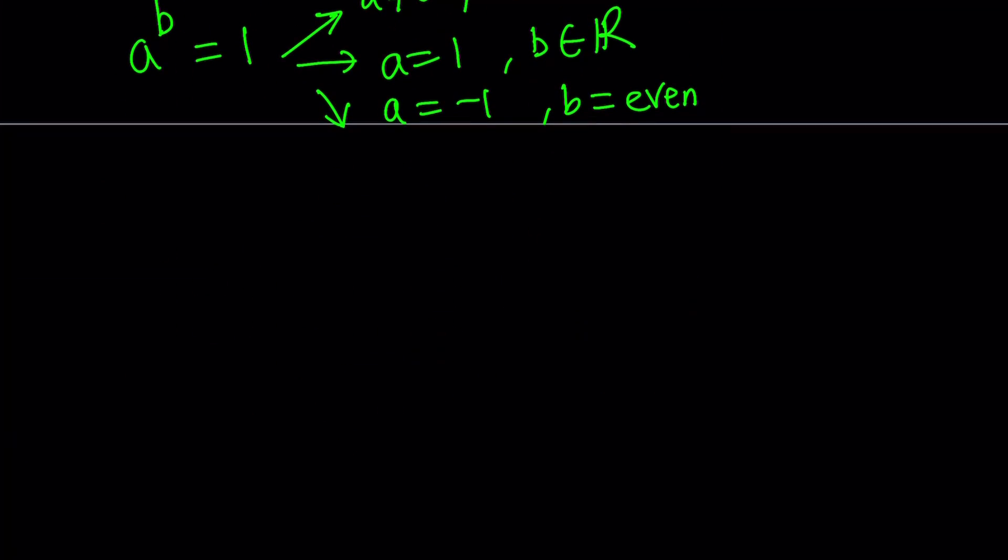First case, x to the power x plus 1 equals 1 implies x does not equal 0 and x plus 1 equals 0. This gives us x equals negative 1. We're going to go ahead and finish this up and then we'll check each solution.